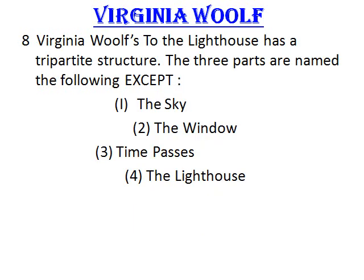Virginia Woolf's To the Lighthouse has a triple structure. The three parts are named — which of the following is not one of them: the sky, the window, time passes, or the lighthouse? The correct answer is 'the sky.' The rest — the window, time passes, and the lighthouse — are the actual titles of the three parts of the novel.